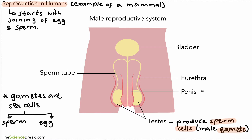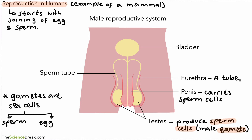Back to our diagram — the penis in reproduction has the job to carry sperm cells out of the body. The urethra is the tube that the sperm cells travel along. The bladder is not really part of reproduction, but it's included so you can see how it connects with the whole system.